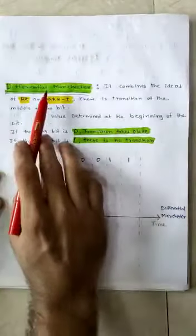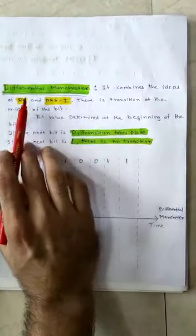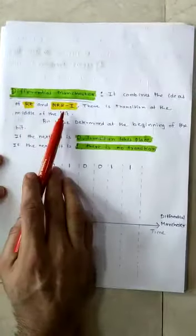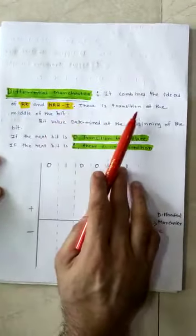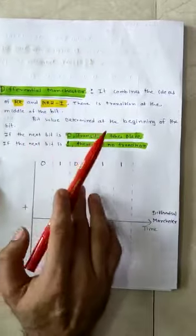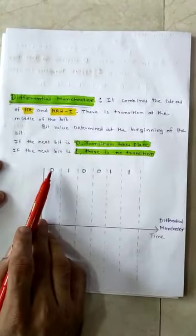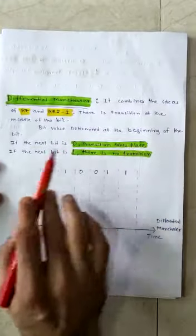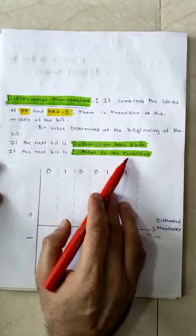Hello friends. As we have seen Manchester, now we are going to see Differential Manchester, which is one of the methods of line coding. Differential Manchester combines the idea of RZ and NRZI. There is a transition at the middle of the bit, and the bit value is determined at the beginning of the bit. If the next bit is 0, the transition will take place. If the next bit is 1, then there is no transition.